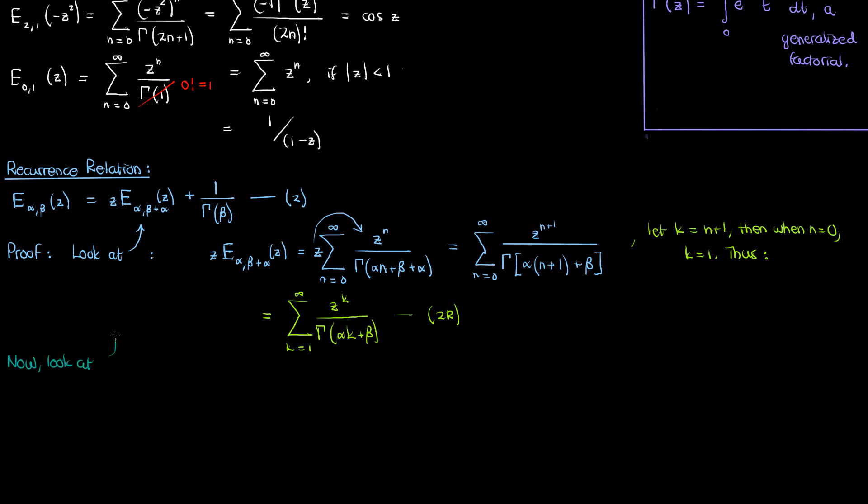Now if I look at the left hand side of equation 2, the Mittag-Leffler function at alpha and beta, then that by definition is just the following. For convenience I'm using the summation index of k instead of n, so just keep that in mind. If I partially expand out the zero term of this summation and don't expand anything else, this is what we get.